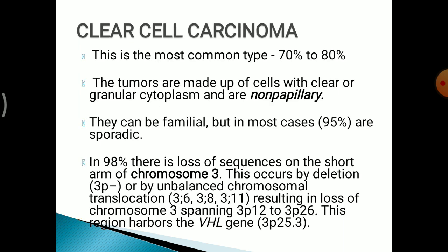Clear cell carcinoma is the most common type, comprising 70–80%. The tumours are made up of cells with clear and granular cytoplasm and are non-papillary. They can be familial or sporadic. In 98% there is a loss of sequence on the short arm of chromosome 3, occurring by deletion 3p or unbalanced chromosomal translocation, and this region harbours the VHL gene.